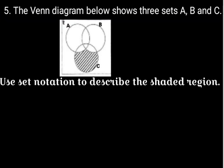The question asks us to use set notation to describe the shaded region. When you look at this set, you see that members of set A and B are not shaded.